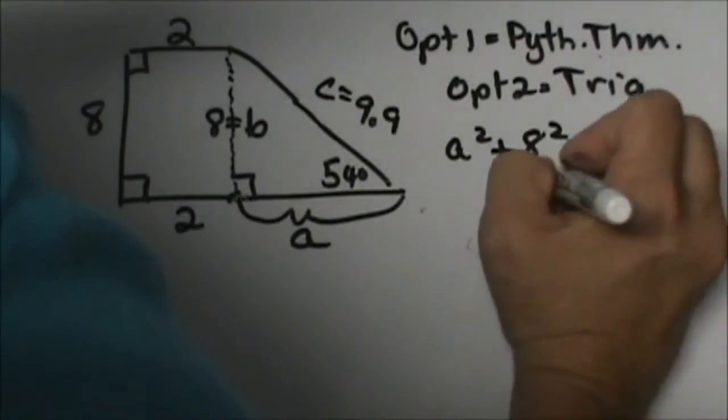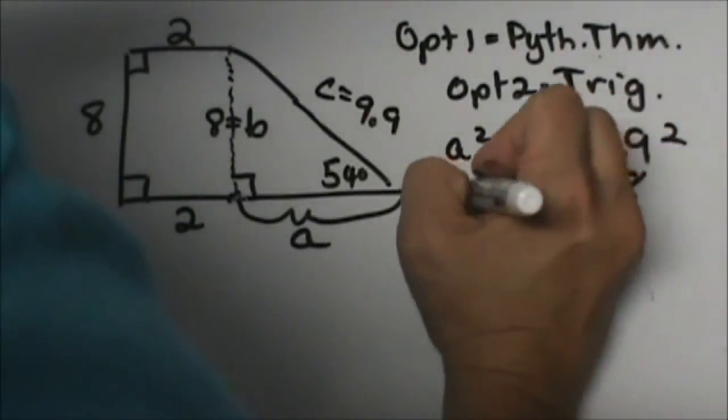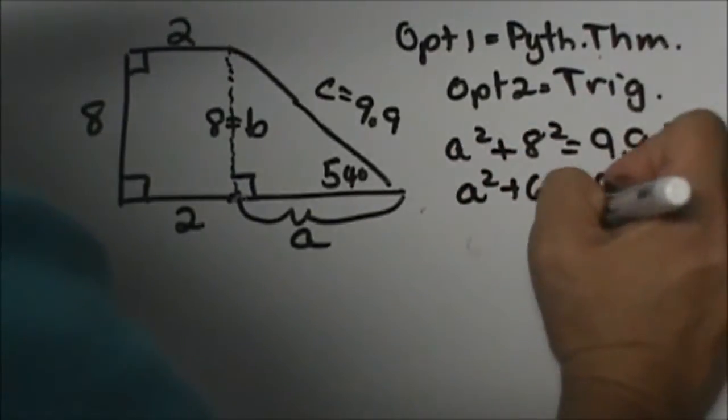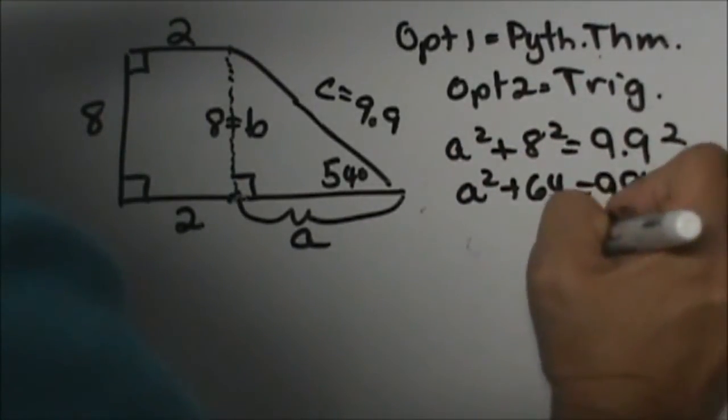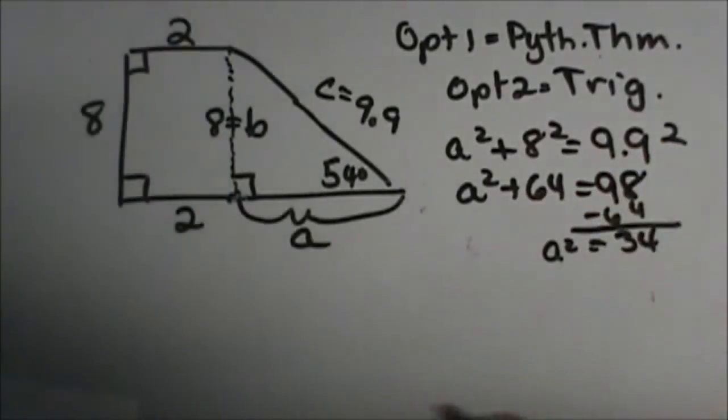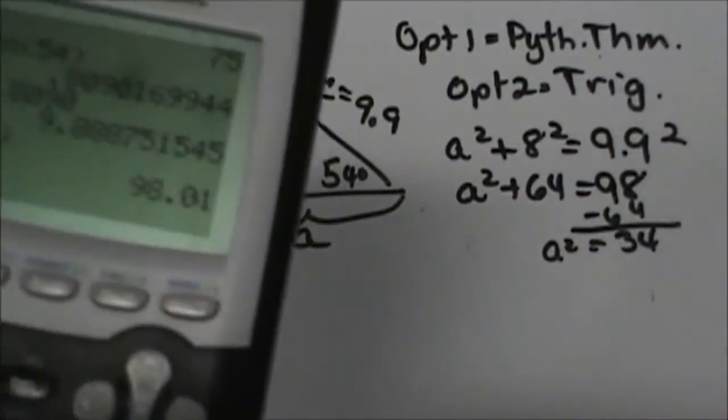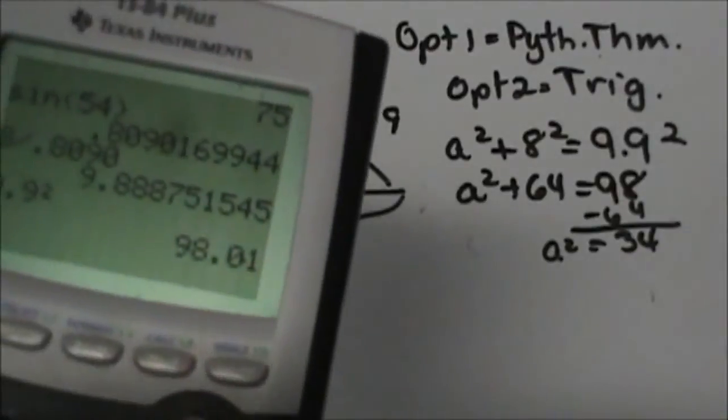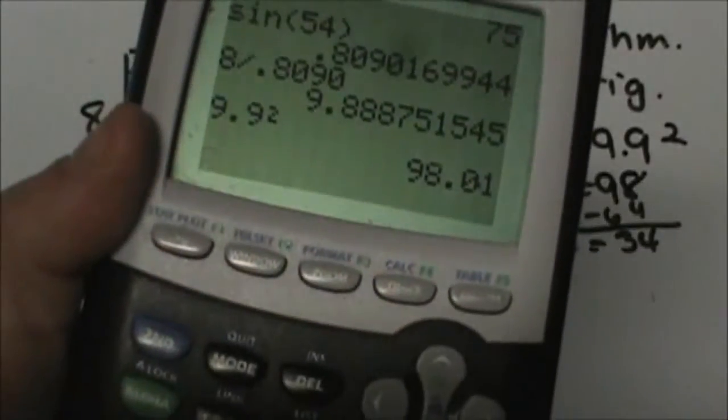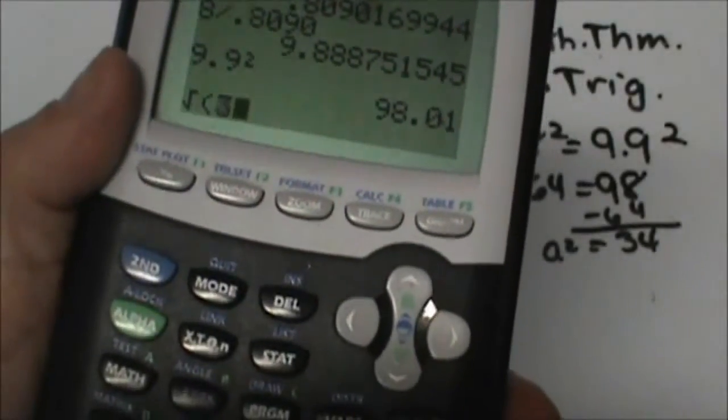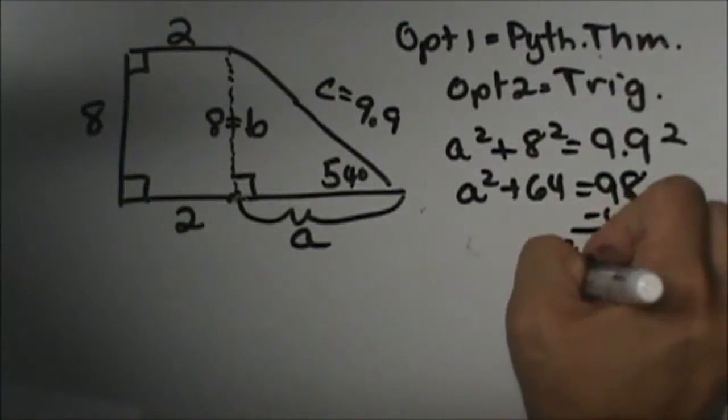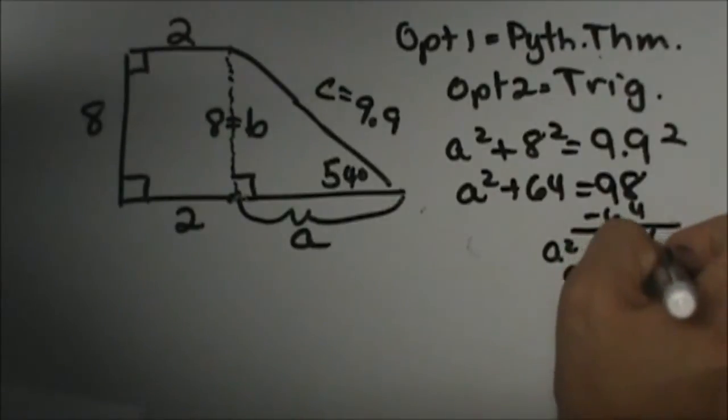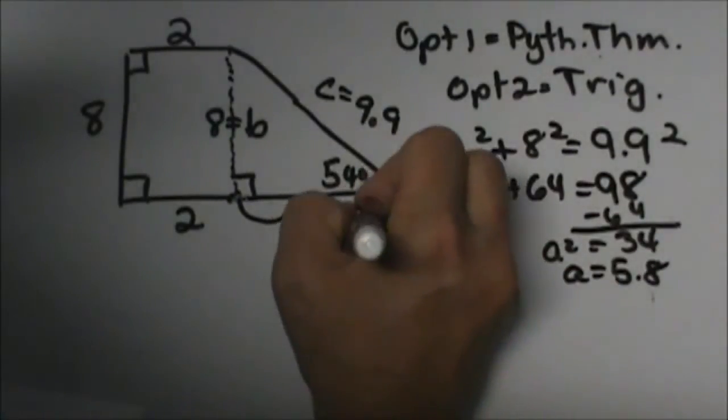98 is equal to 64 plus A squared, and I'm going to subtract 64, and I get 34. So A squared is 34. Let's take the square root, which is second function, square root of 34, and I get 5.8.